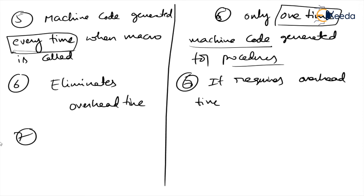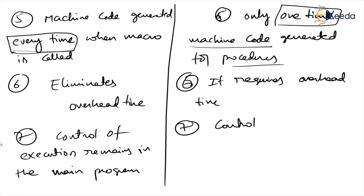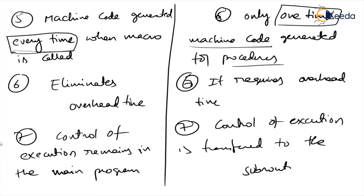Last point: in macros, control of execution remains in the main program. Whereas in procedures, control of execution is transferred to the subroutine or procedure. That is very very important.